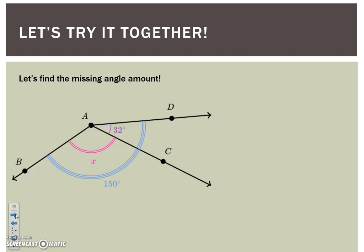Let's try another one together. We know that this whole angle is 150 degrees. We know that this small part is 32 degrees, and we're trying to find the missing piece.